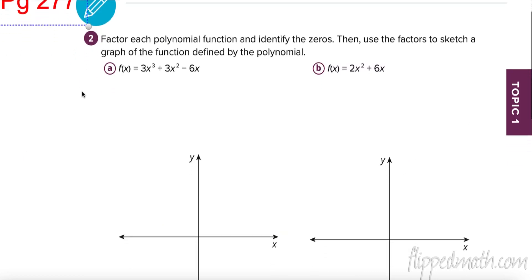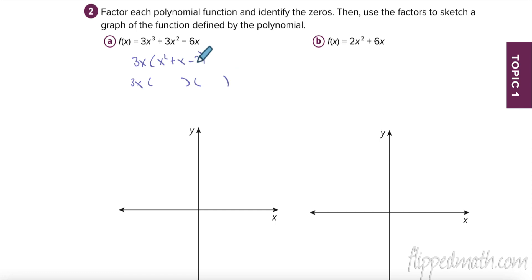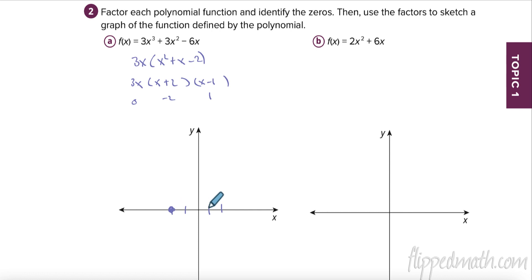Let's try another one. First, take out a common factor - 3x goes into 3, 3, and 6 - so I take that out and divide to get x² + x - 2. Two numbers that multiply to negative 2 and add to 1 are positive 2 and negative 1. So zeros are at 0, -2, and positive 1. It's a cubic.